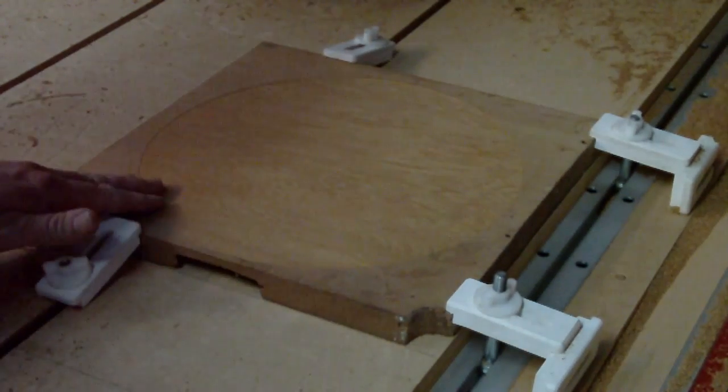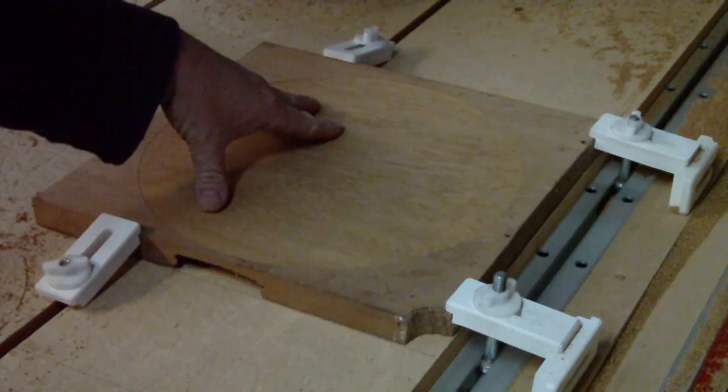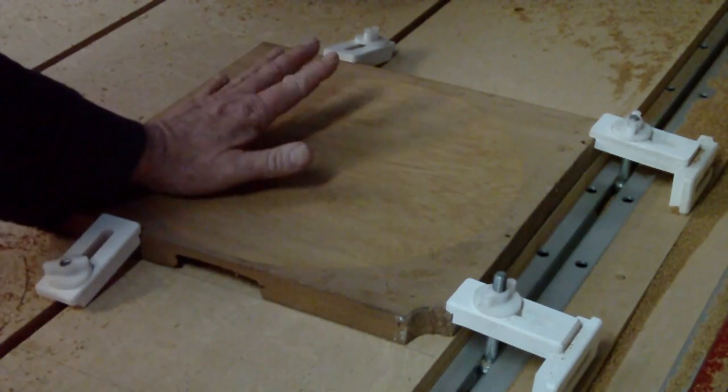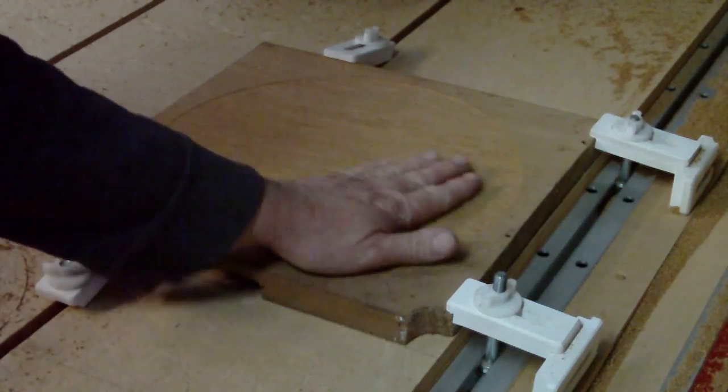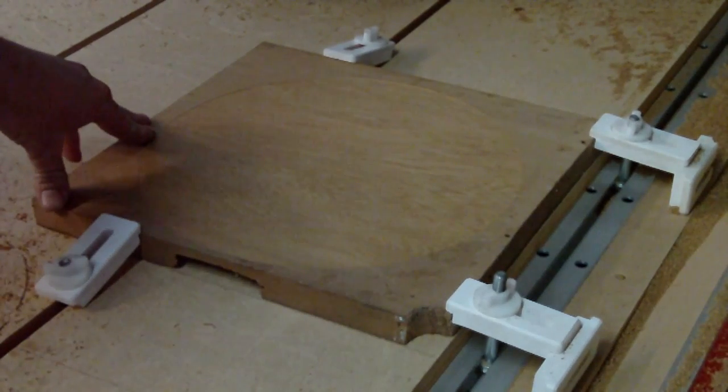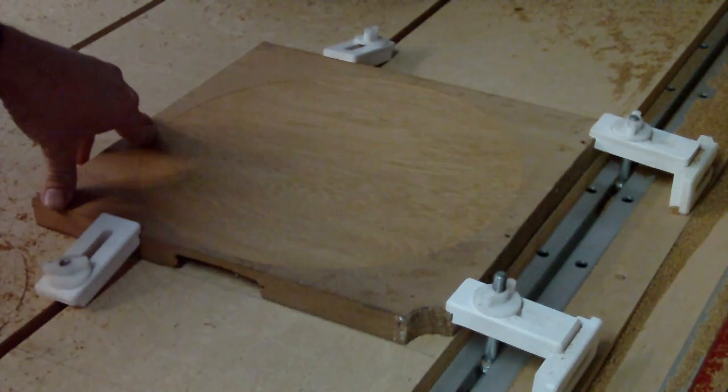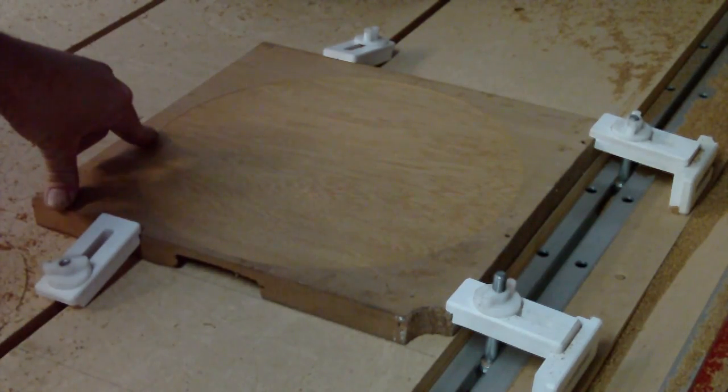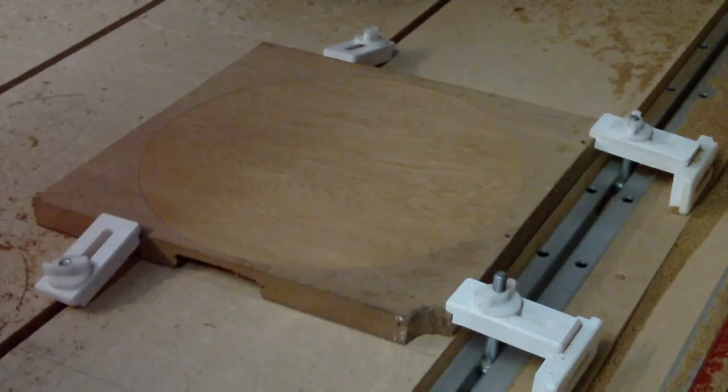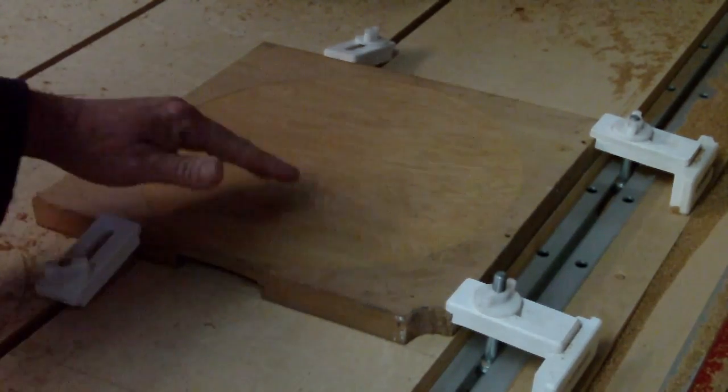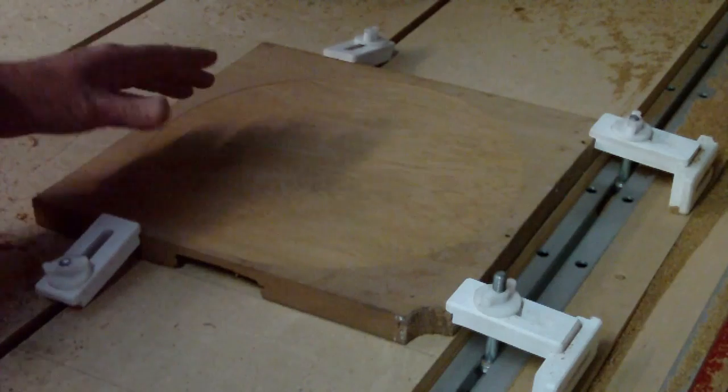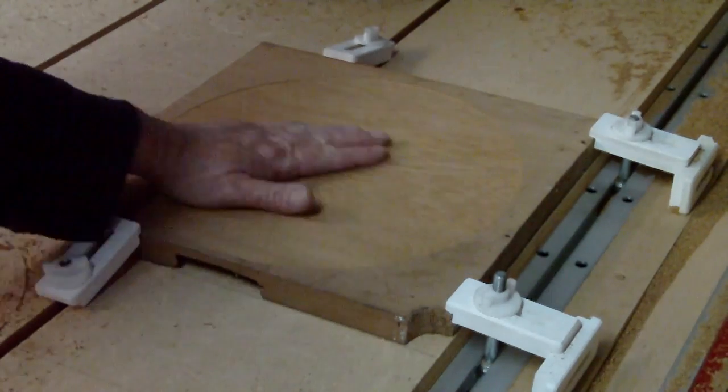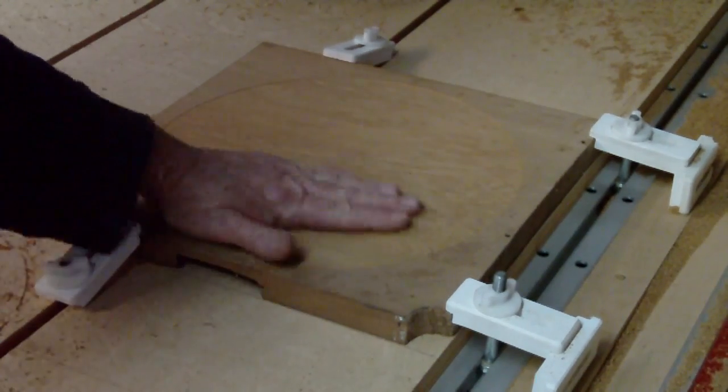You might well ask why did I machine this with this cutter rather than flatten the board on a thicknesser. The answer is I actually don't have a thicknesser to machine the board flat so this is the easiest way of doing it. I could have used a much bigger cutter and done it a lot quicker but this particular cutter gives a really nice finish. I basically don't need to touch this again.